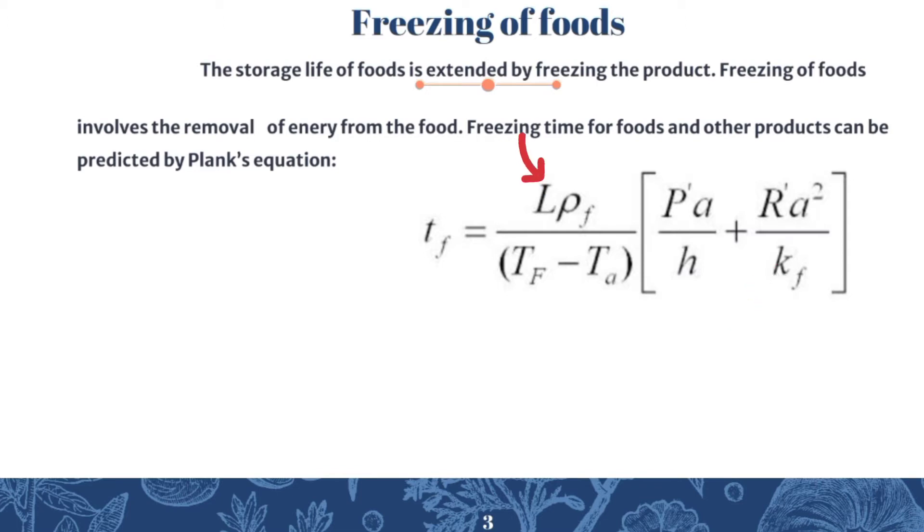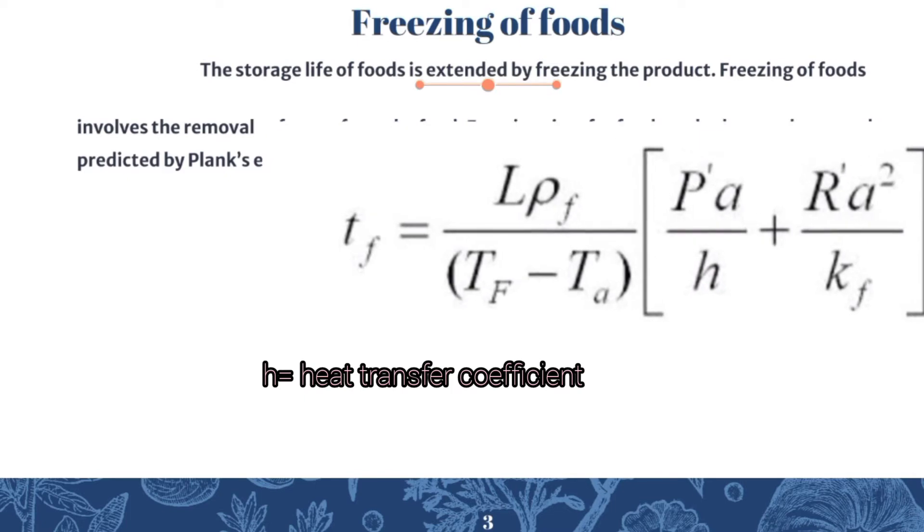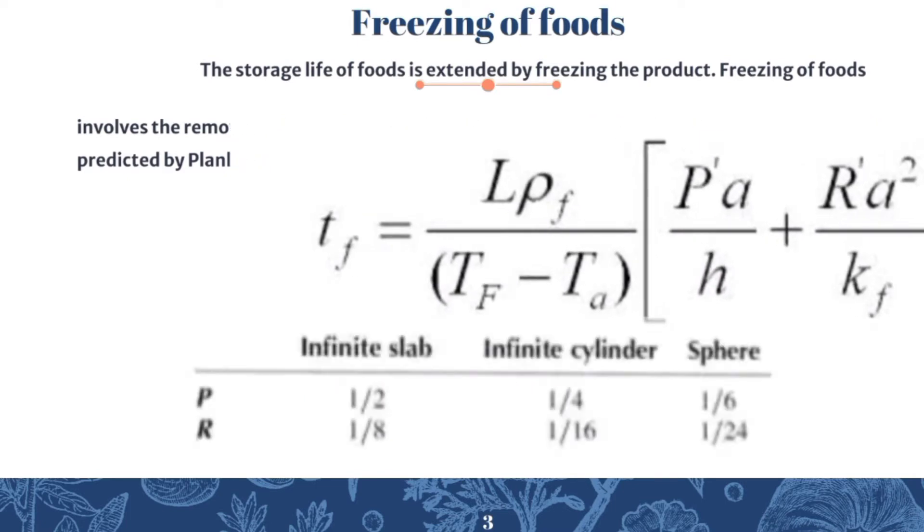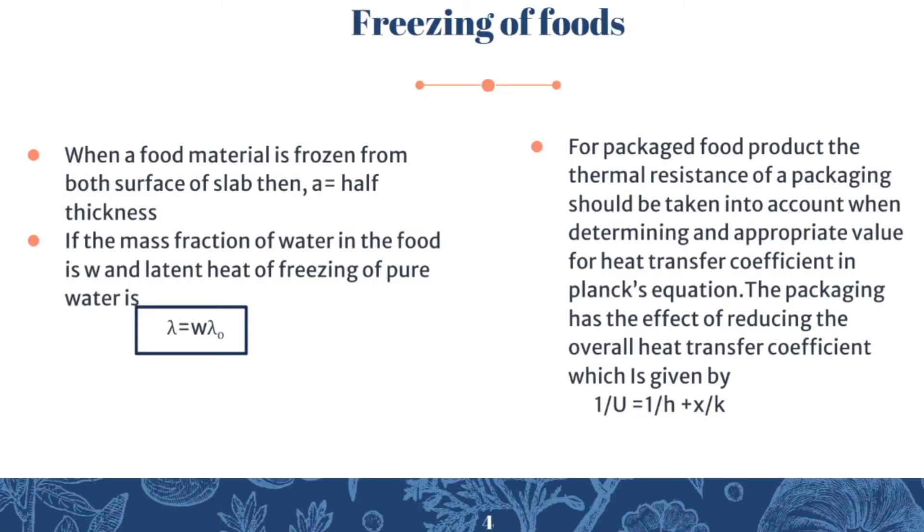In this equation, the value of p and r are different for different geometries. For infinite slab, infinite cylinder, and sphere, the values of p and r are shown here. Now let's discuss the important formulas related to Plank's equation.